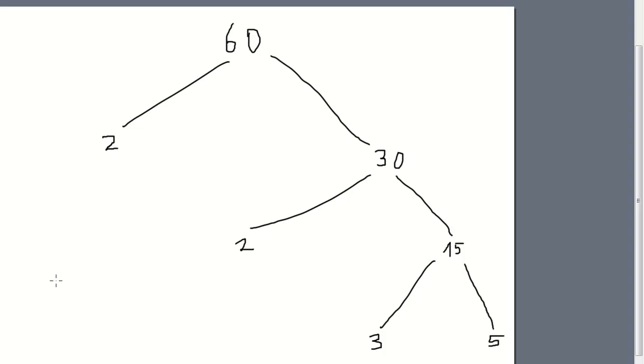We can say now that 60 is equal to 2 times 2 times 3 times 5. There we are. So this is called the prime factorization of 60.